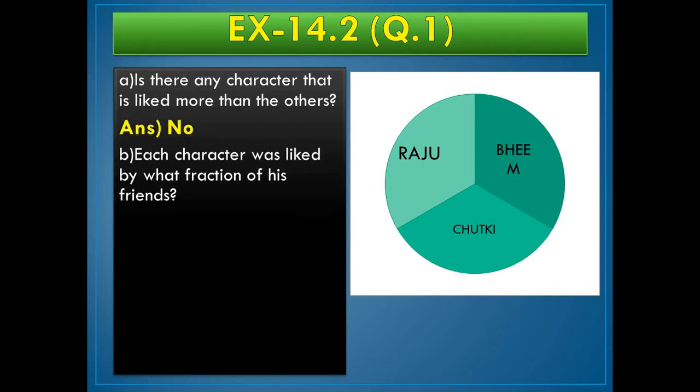Question number b, each character was liked by what fraction of his friends? Because the chart is divided into three parts and if we talk about each of the character, each character represents a fraction 1 by 3.